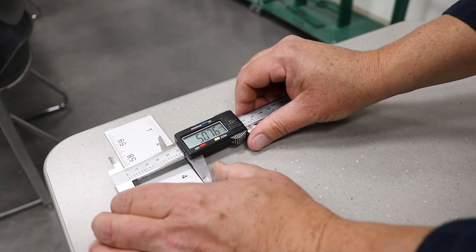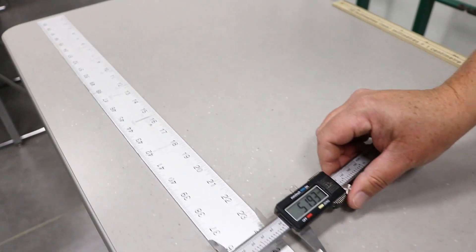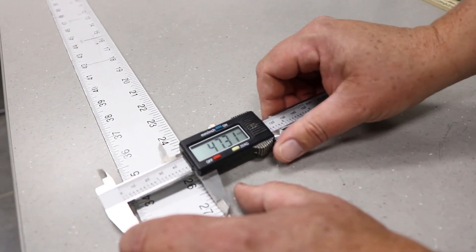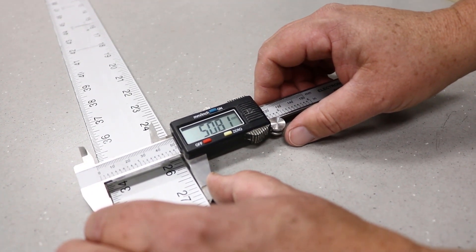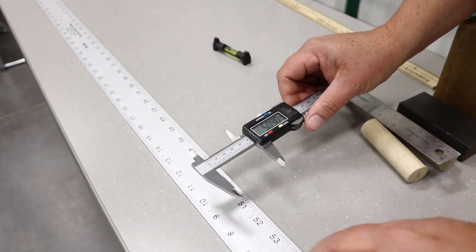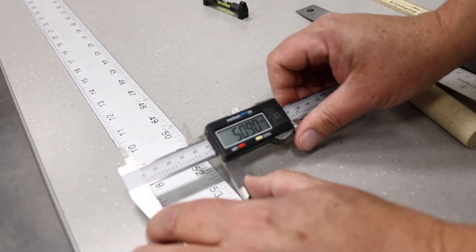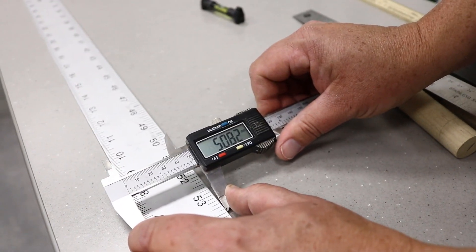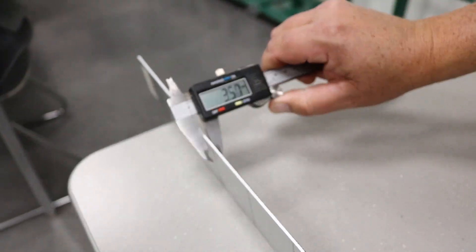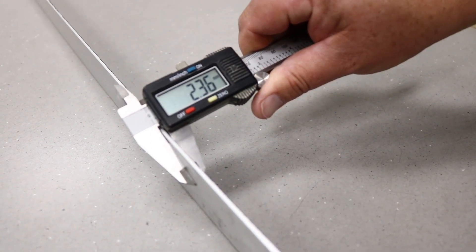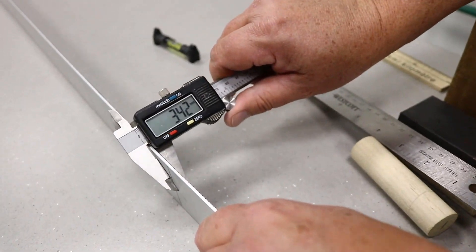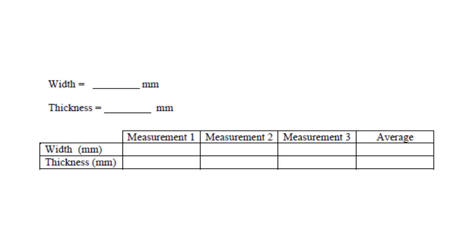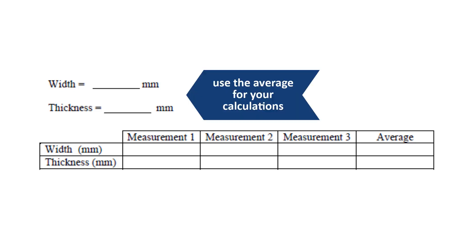Before the test procedure starts, measure the width and thickness of the aluminum straightedge at three different points along its length using the digital caliper. Record these measurements in the table shown here and use the average for your calculations.